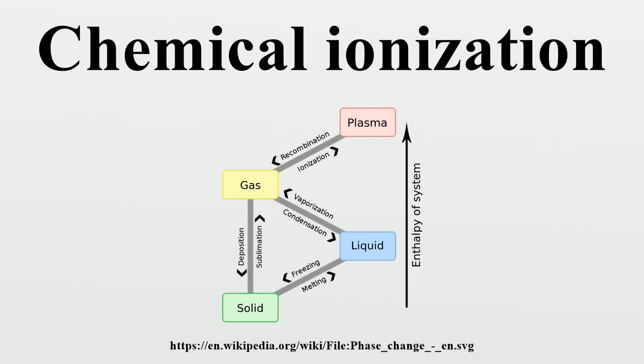Chemical ionization is an ionization technique used in mass spectrometry. Chemical ionization is a lower energy process than electron ionization. The lower energy yields less or sometimes no fragmentation, and usually a simpler spectrum.